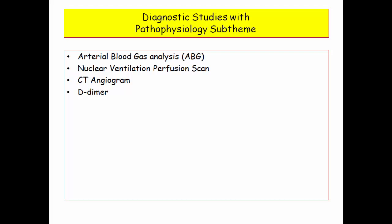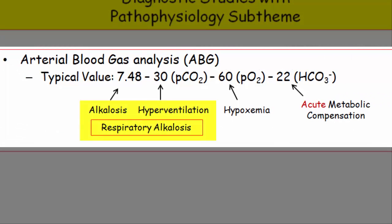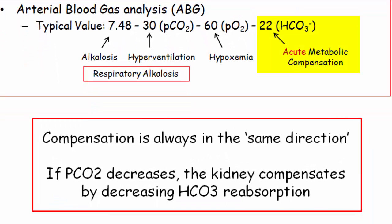Diagnostic studies linked to important pathophysiology: ABG, nuclear VQ scan, CT angiogram, and D-dimer. Starting with the ABG — the patient had a PE and is hypoxic. The pulmonary response to hypoxia is hyperventilation. The patient will be alkalotic with a decreased PCO2 from hyperventilation — respiratory alkalosis. Hypoxemia is sensed by peripheral chemoreceptors at the carotid body, which increases respiratory drive. In the setting of respiratory alkalosis, the kidneys compensate to normalize the pH — metabolic compensation, always in the same direction as the primary disorder.